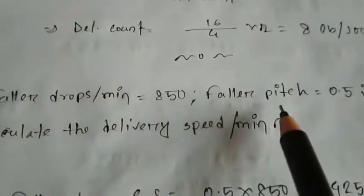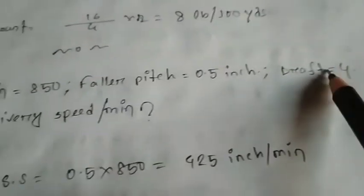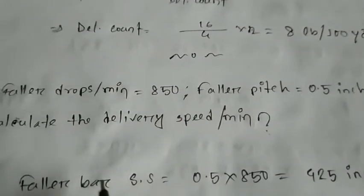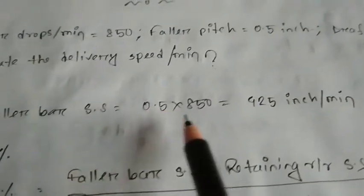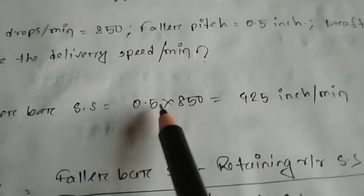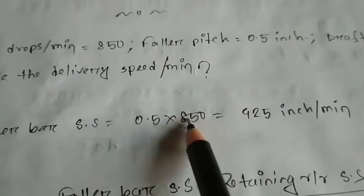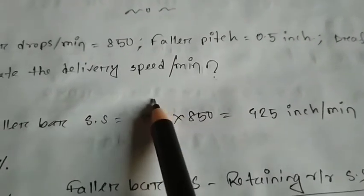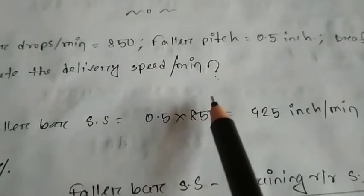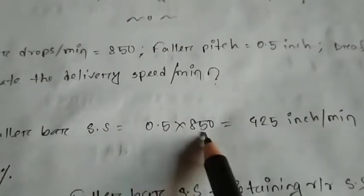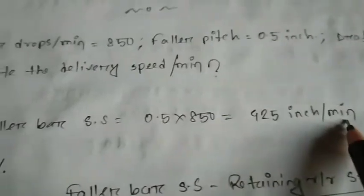That will be the retaining roller. If it's a retaining roller, then we'll start the delivery speed. So we are going to start with the follower surface speed, which is 0.5 to 850, so we have 5 inches per minute, and 850 drops per minute, 425 inches per minute.